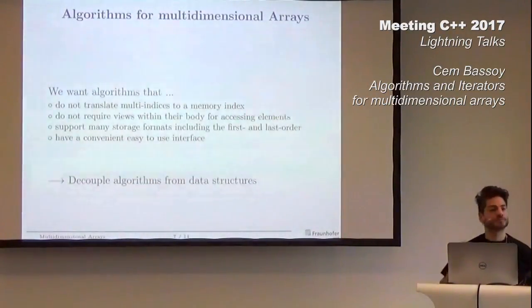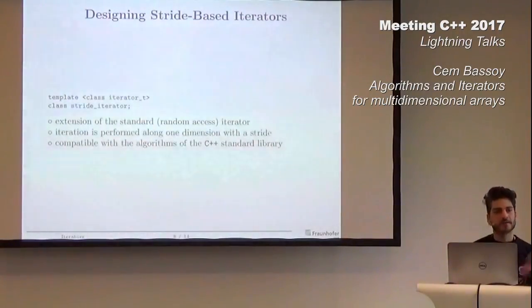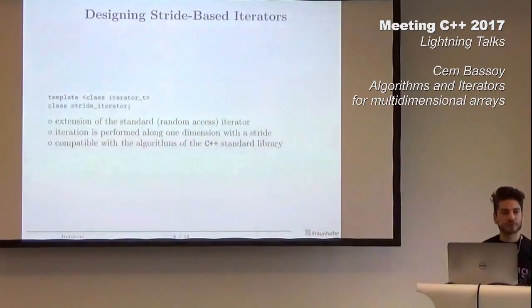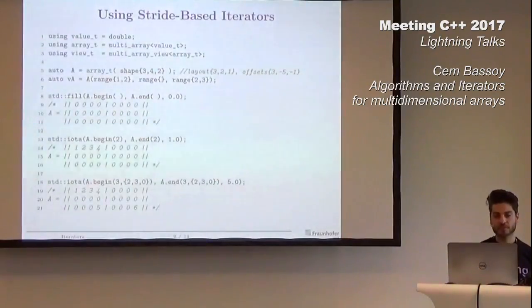So decouple algorithms from data structures. We start with iterators because that's the linkage between algorithms and data structures. The first thing is that we define a stride-based iterator. It's an extension of the standard random-access iterator with a stride within it, so it is defined for a specific dimension. What's nice is it's compatible with the C++ standard library algorithms.